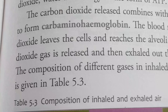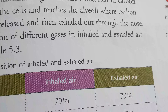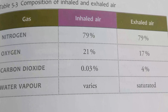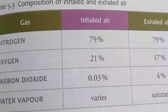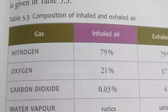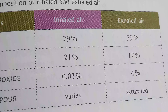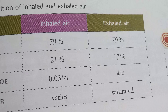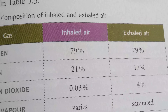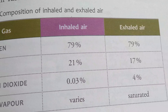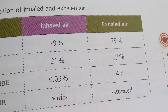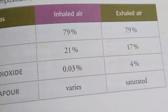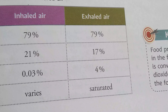The composition of different gases in inhaled and exhaled air is given in this table. In inhaled air: nitrogen is 79%, oxygen is 21%, and carbon dioxide is 0.03%. In exhaled air: oxygen decreases to about 16%, carbon dioxide increases to about 4%, and water vapor is saturated.